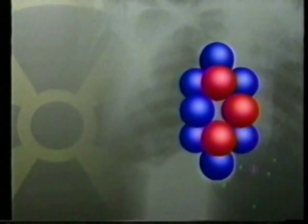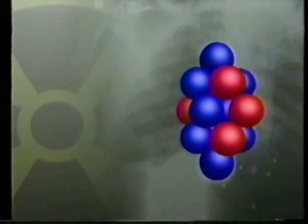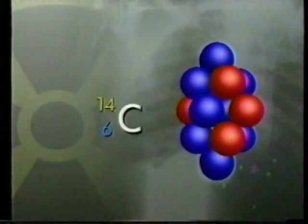What is this? Six protons, eight neutrons. Six plus eight equals fourteen. Atoms of the same element with different mass numbers are called isotopes. This is carbon-14.